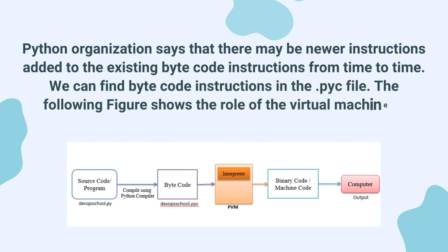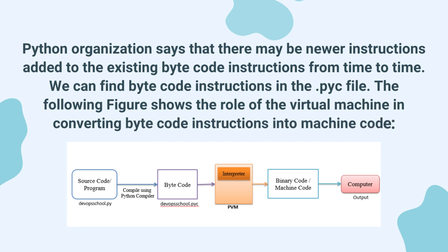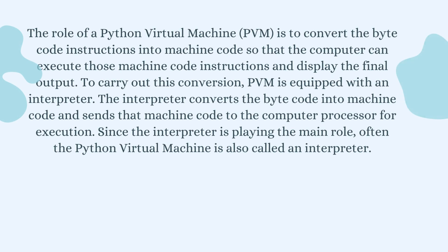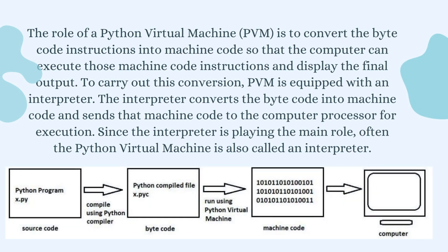The following figure shows the role of the virtual machine in converting bytecode instructions into machine code. The role of a Python Virtual Machine, PVM, is to convert the bytecode instructions into machine code so that the computer can execute those machine code instructions and display the final output. To carry out this conversion, PVM is equipped with an interpreter. The interpreter converts the bytecode into machine code and sends that machine code to the computer processor for execution.